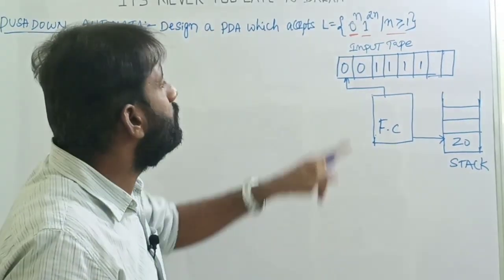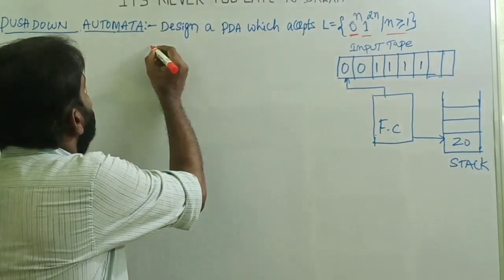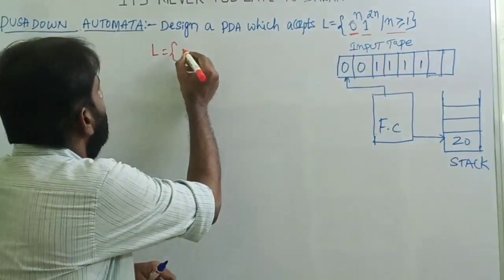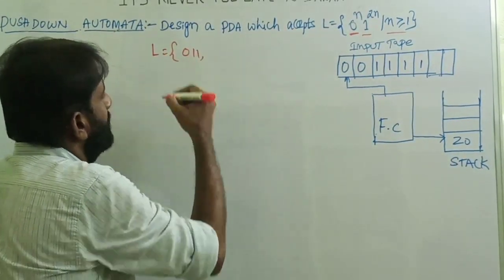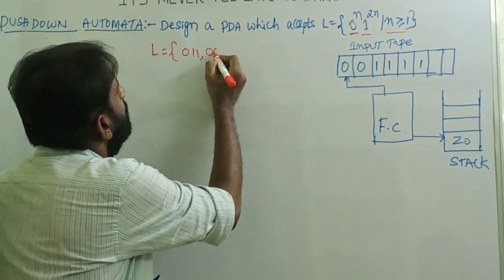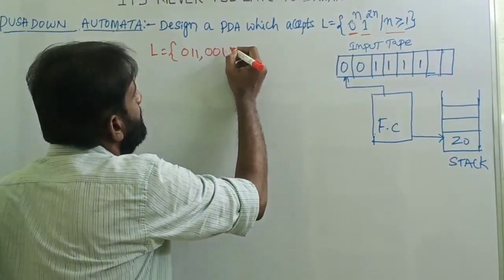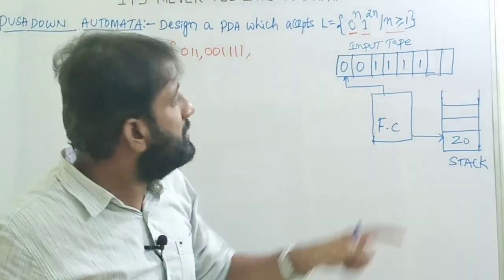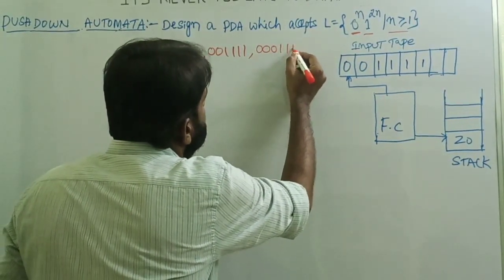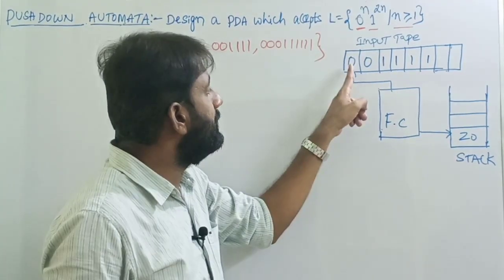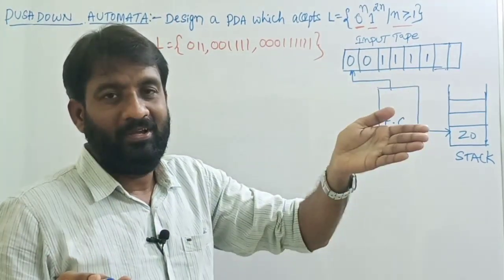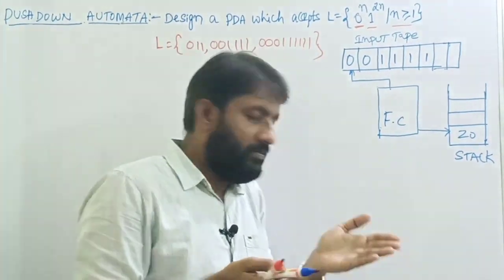First, find out what strings are formed over this language L. If n = 1, there is a single 0 followed by two 1s. If n = 2, there are two zeros then four ones (2×2=4). If n = 3, there are three zeros followed by six ones. Clearly, for every single zero there exist two ones: for two zeros, four ones; for three zeros, six ones; for four zeros, eight ones.